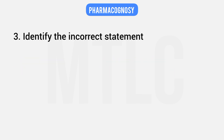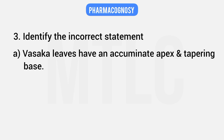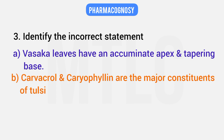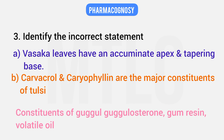Third question: identify the incorrect statement. There are 4 statements; only one statement is incorrect. Vasaka leaves have an acuminate apex and tapering base — correct. Carvacrol and caryophyllin are stated as major constituents of Guggul — this is the incorrect statement, because Guggul's major constituents are actually oleo-resin, gum resin, and volatile oil (including guggulsterone).